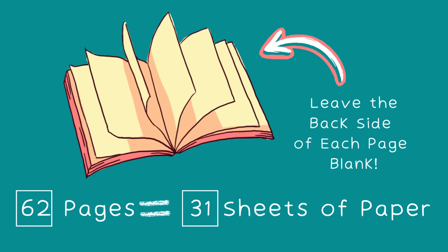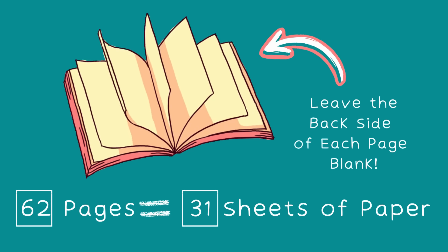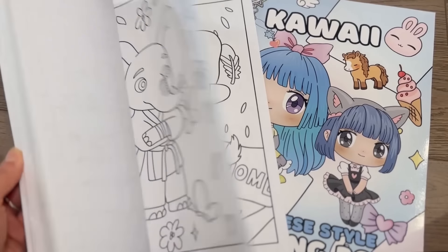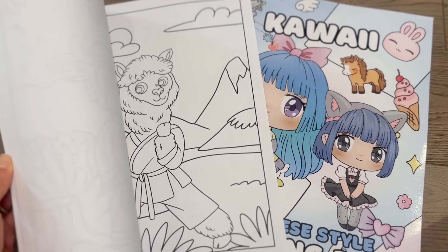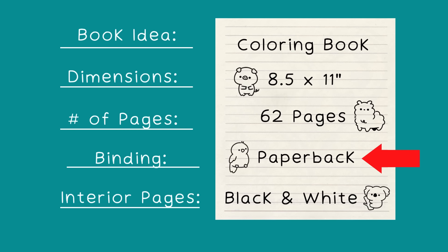For coloring books, I highly recommend leaving the back side of all your pages blank, meaning we will only have illustrations printed on the front side of each page. For binding, we will choose paperback as opposed to hardcover, as this is the most common for coloring books. And for interior pages, we will choose black and white because we're creating a coloring book — there is really no reason to have pages printed in color.